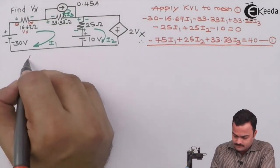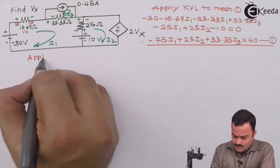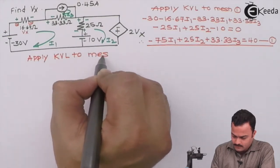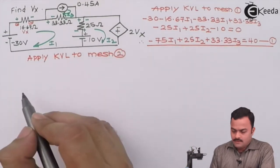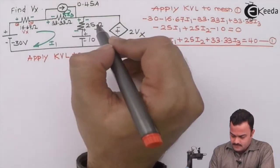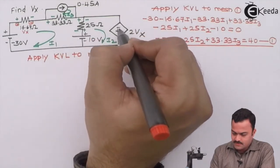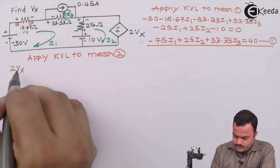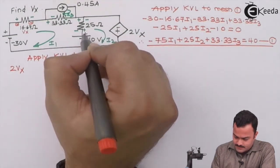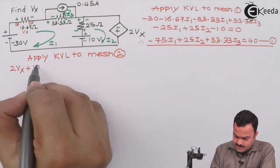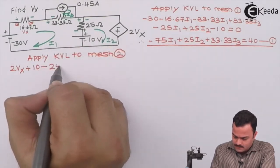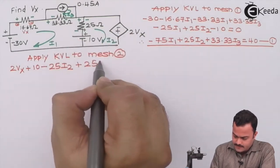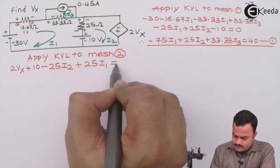Let's go to mesh 2. Apply KVL to mesh 2. Let's start from this voltage source, so it's minus plus, it's a voltage controlled voltage source, so that becomes 2vx minus plus, plus 10, plus minus, minus 25i2, minus plus, plus 25i1 equal to zero.